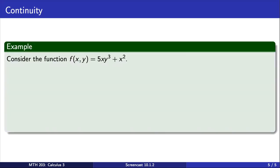For example, consider this function f. First, since x is continuous everywhere, by property 1 from the previous slide, we know that 5x is also continuous everywhere.